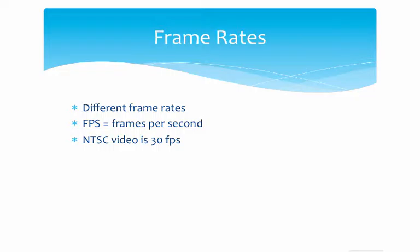So NTSC video, which is used in North America, has a 30 frame per second frame rate. If you're in Europe, or I think Asia, then you're working with PAL video, which is 25 frames per second. And these are simplifications, by the way. We're still in video 1. If you're shooting in traditional film, that's at 24 frames per second, so different frame rates.